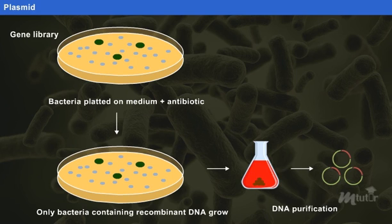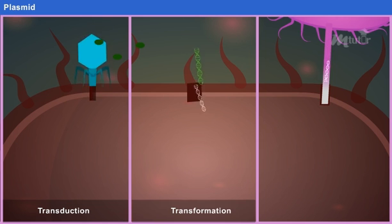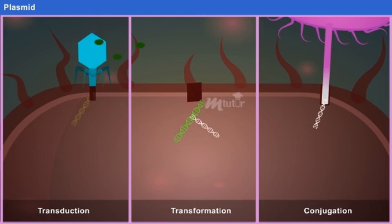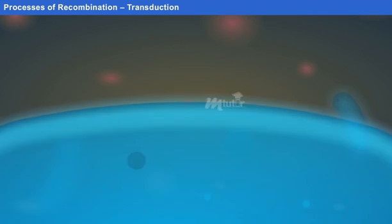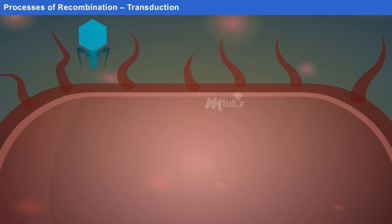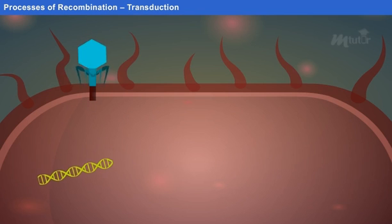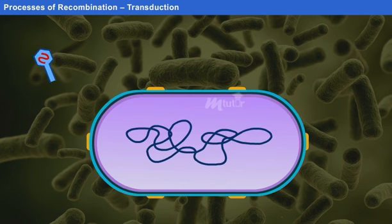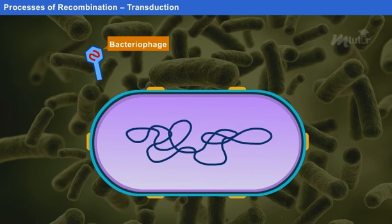Moving on, let us discuss in detail the processes of recombination that include transduction, transformation, and conjugation. Transduction is a type of bacterial reproduction in which a bacterium is infected by a virus that injects short pieces of chromosomal DNA from one bacterium to another. The bacterial virus that helps in the transfer of DNA segment is called a phage or bacteriophage.